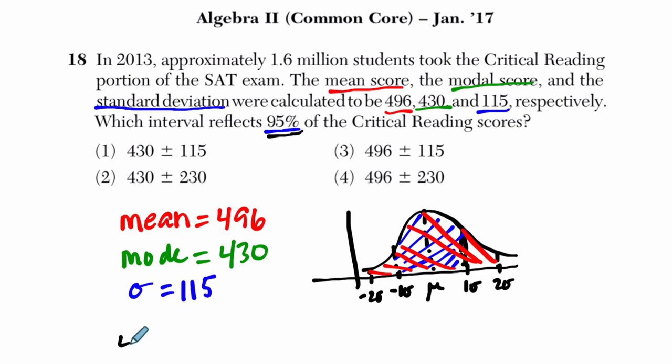We've got our mean, 496, that's our middle point, plus or minus two standard deviations. So we have to go in both directions here, and that's 496 plus 2 times 115 is 496 plus 230. All right, I hope that helped.